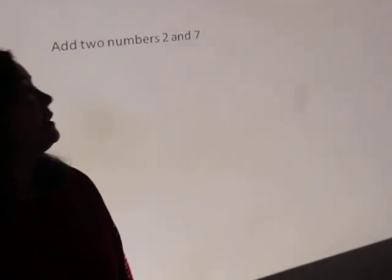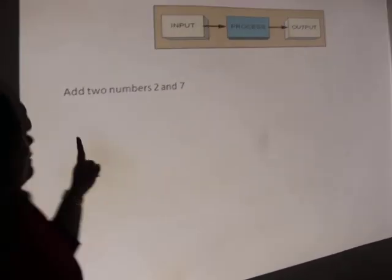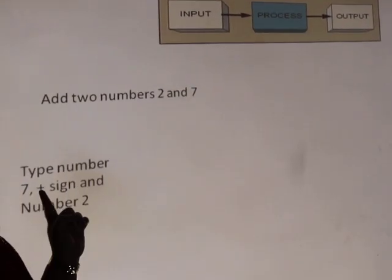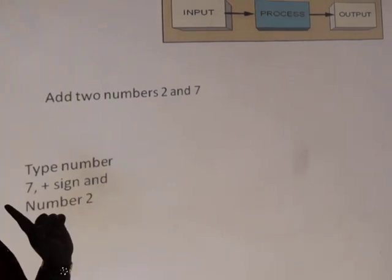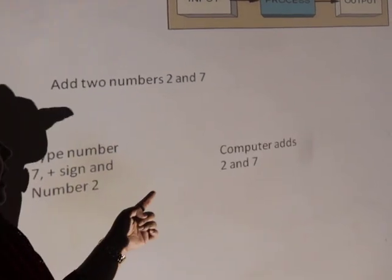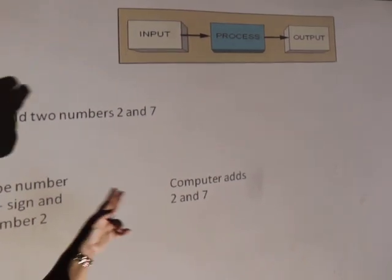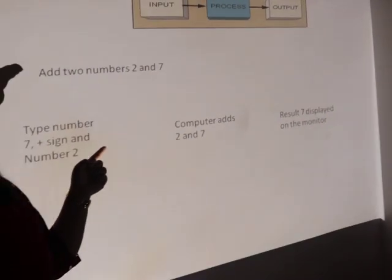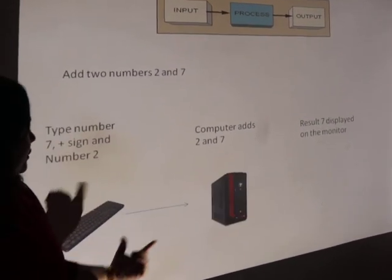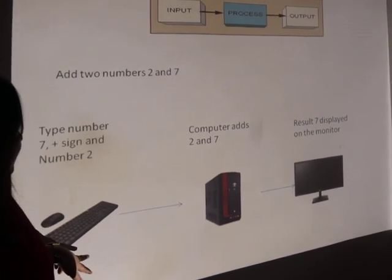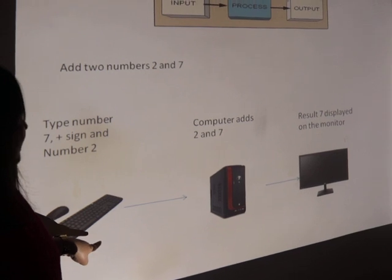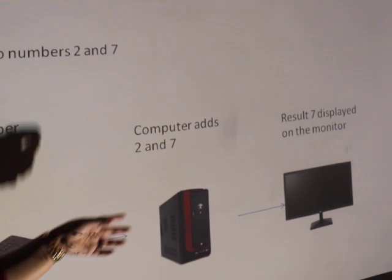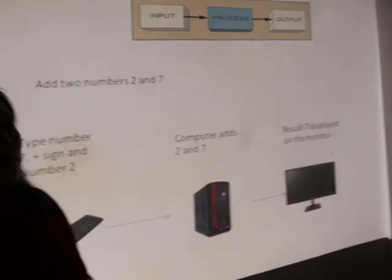To understand this process, let's see another example where we have to add two numbers: 2 and 7. First, the user types the numbers 2, 7, and then the plus sign. After that, the computer processes it — that is, it adds the two numbers 2 and 7. Finally, the result 9 is displayed on the monitor. As shown in the picture, the user inputs the instruction via an input device like a keyboard, the computer performs the operation, and the result is displayed on the monitor.